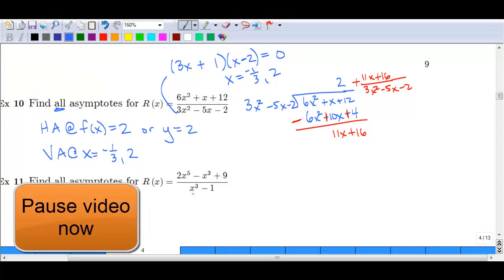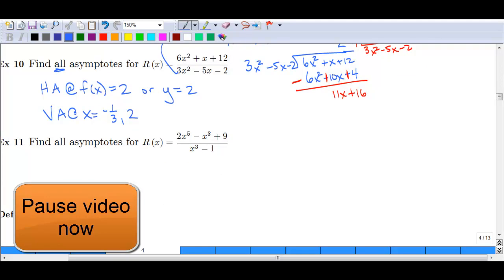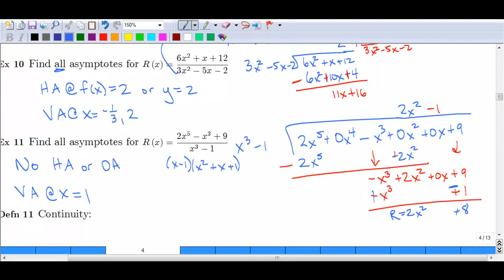So I want you to pause the video at this point and work out example 11. And then resume the video to see if you are correct. So this one was a little bit trickier if you were trying to do long division. Because you'll see you needed to throw some zero terms in here. Again, you didn't have all of those terms between x to the fifth and x cubed and 9. So you need to fill those in with zeros or at least leave the space open so that you don't mix things up. You should have found when you did the long division that you ended up with 2x squared minus 1. With a remainder of 2x squared plus 8. And again, if you need to pause the video here and look over any of that, please feel free to do so.